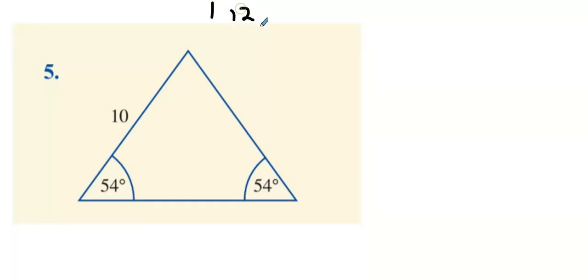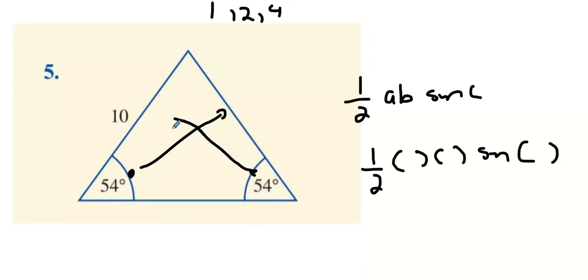So we did 1, 2, and 4 so far. Now we're on to 5. Now question 5 is the same thing, one half a b sine c. Now what you might be inclined to say is they didn't give me two sides, they only gave me one side. Well there's a trick here. The trick here is this is an isosceles triangle where 54 degrees looks at this side and 54 degrees also looks at this side. It means both sides have to be a length of 10 centimeters each.